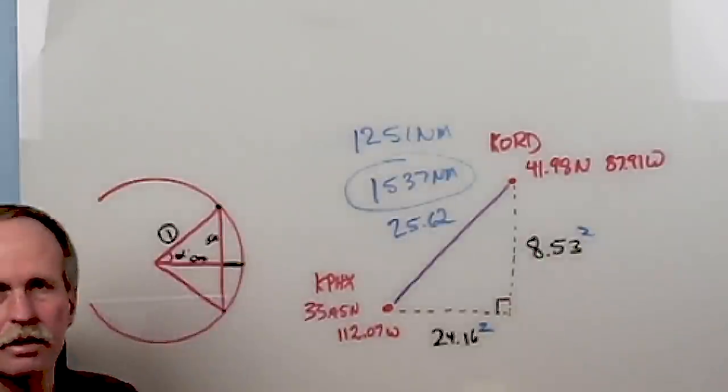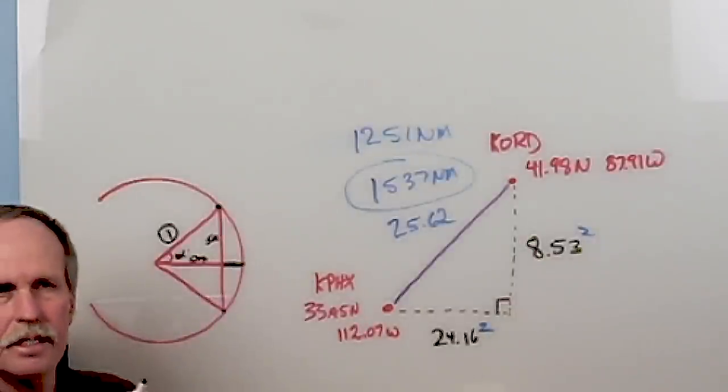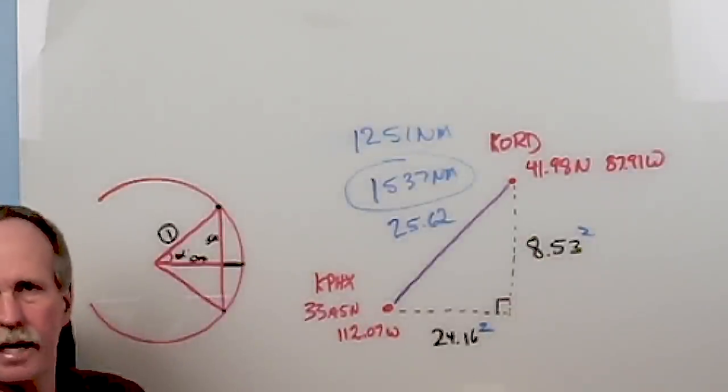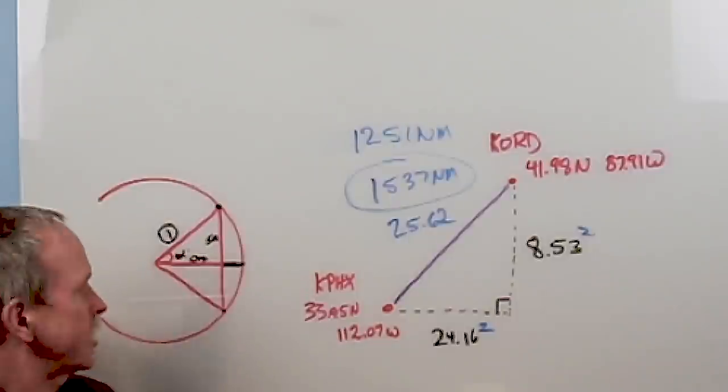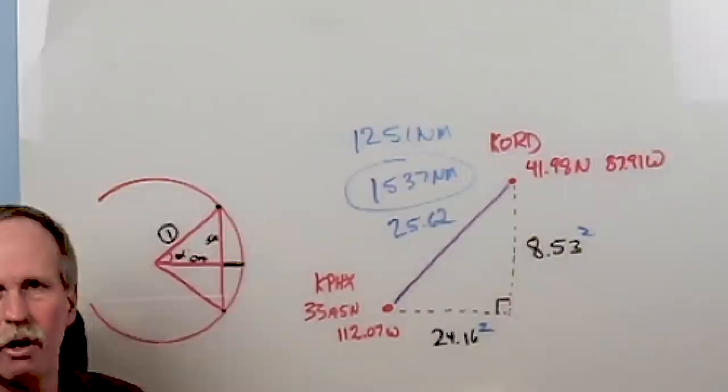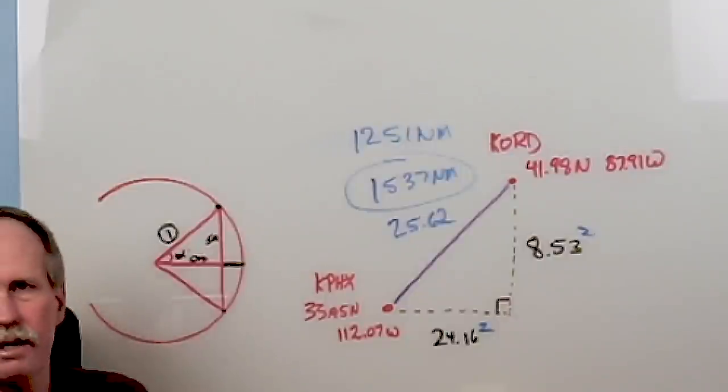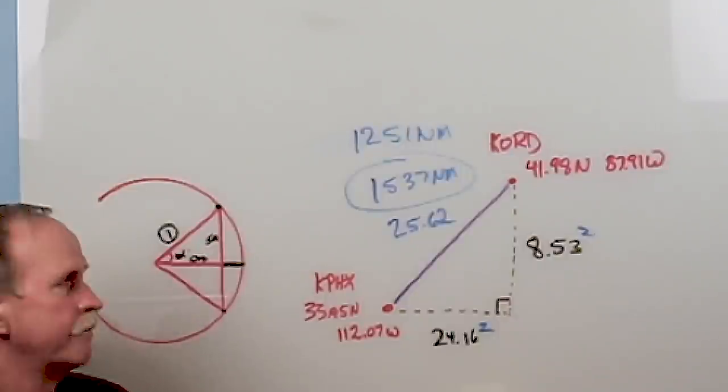And this segment is called the versine. Sometimes you may hear it referred to as sagittah, which means in Latin, the arrow. And I think that you can see why they call that an arrow. But in this video, we're going to refer to it as the versine.